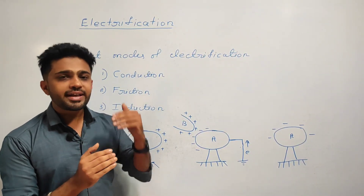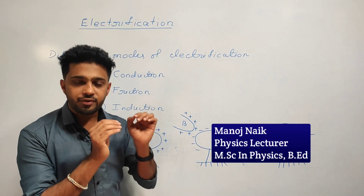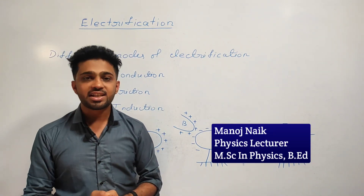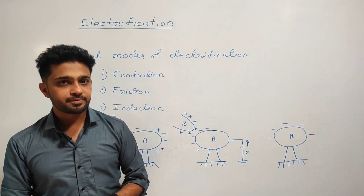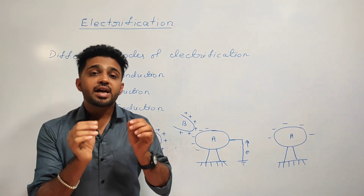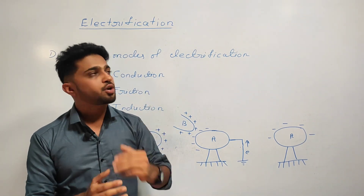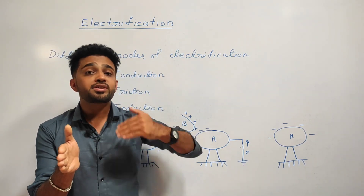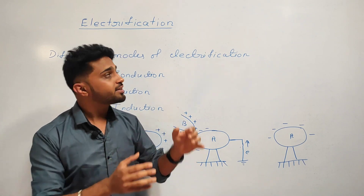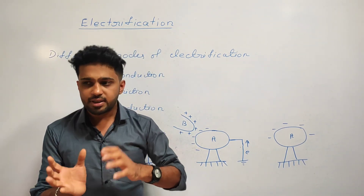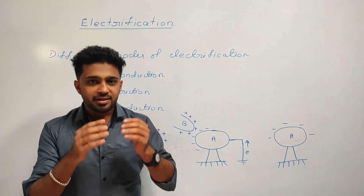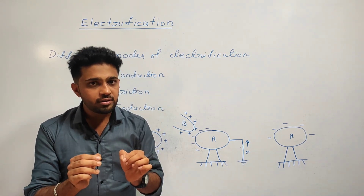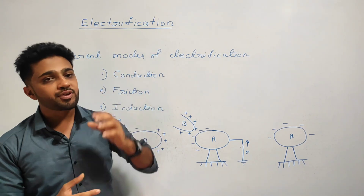In this video, what is electrification and what are the different types or different modes of electrification? The process of charging the uncharged body is called electrification. The neutral body is charged. The process of adding or removing electrons from a body is called electrification.